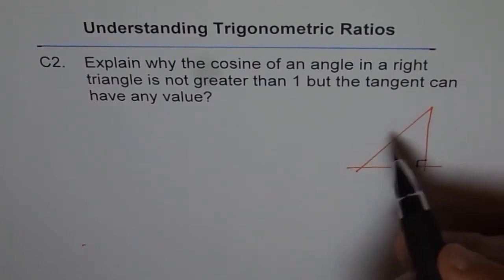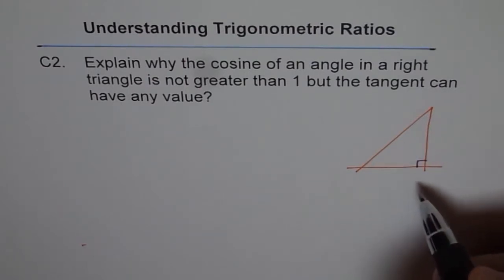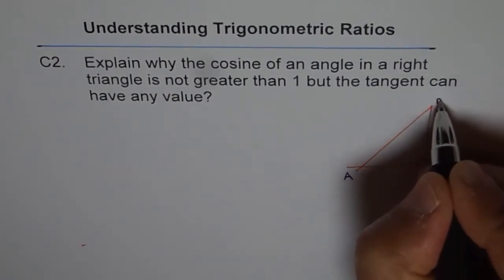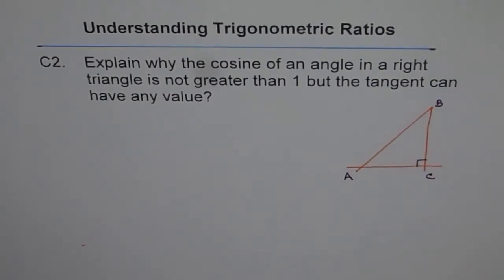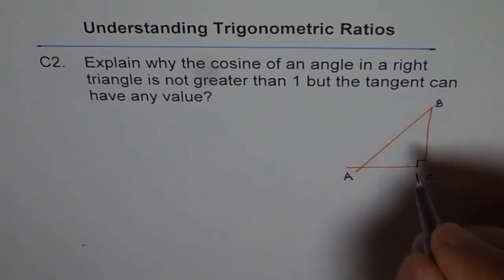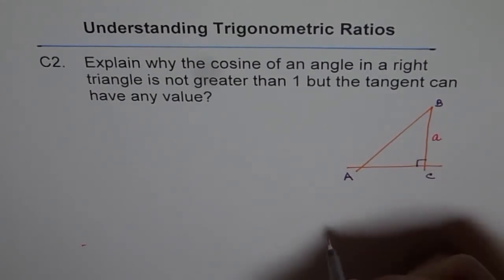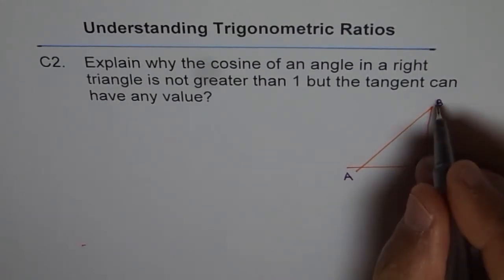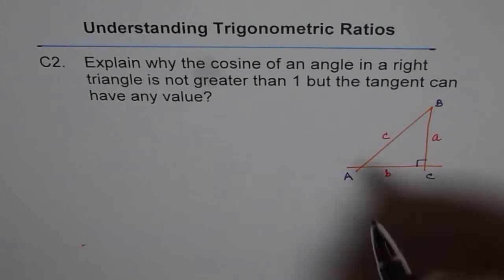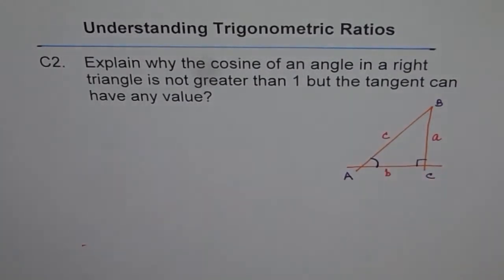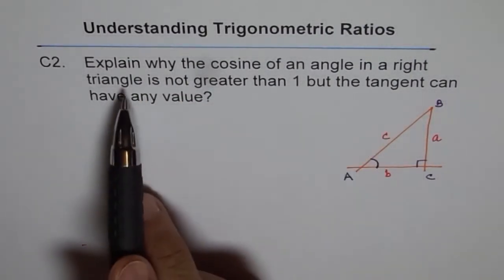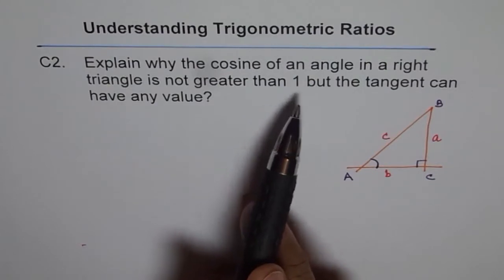Here is our right triangle, and let's assume this angle is 90 degrees. Whenever we talk about trigonometric ratios, we always get back to a right triangle. We'll name this triangle ABC as usual, and since the triangle is ABC, the sides should also be lowercase a, b, c. Side a is opposite angle A, and we have sides b and c. By default, we will use angle A for our discussion.